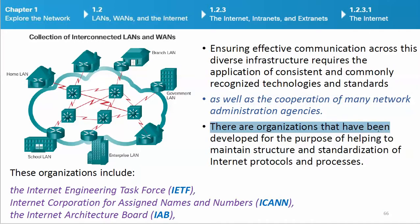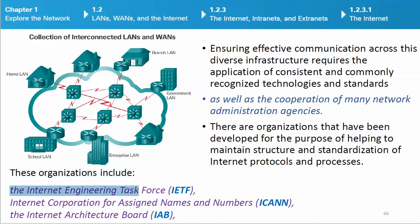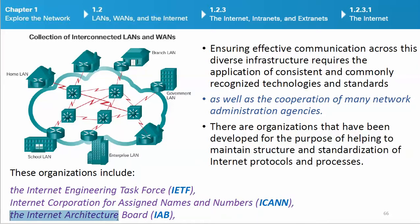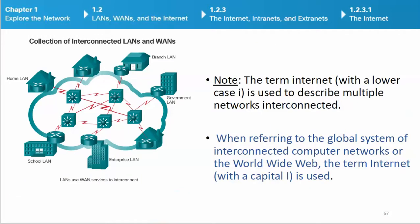There are organizations developed for the purpose of helping to maintain structure and standardization of Internet protocols and processes. These organizations include the Internet Engineering Task Force (IETF), the Internet Corporation for Assigned Names and Numbers (ICANN), and the Internet Architecture Board (IAB), plus many others. Note: the term 'internet' with a lowercase 'i' is used to describe multiple networks interconnected.